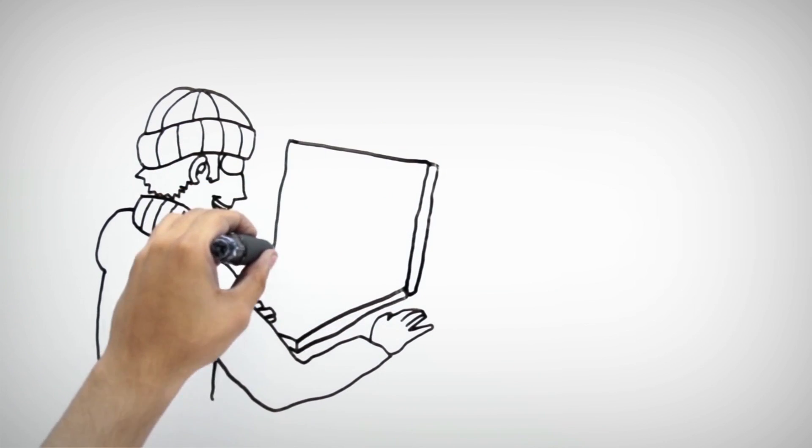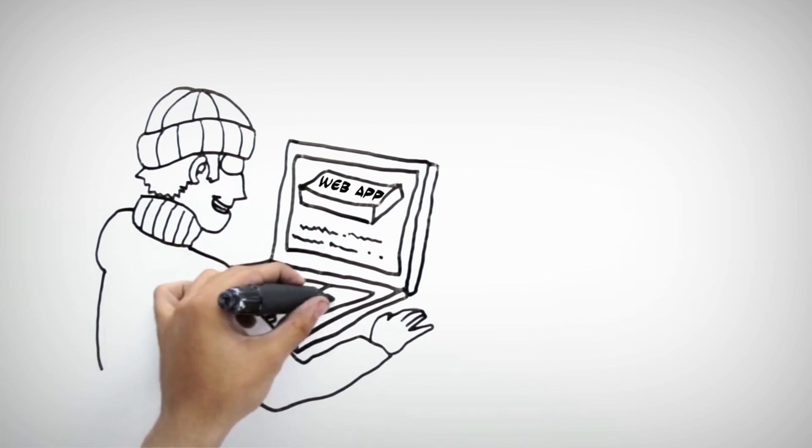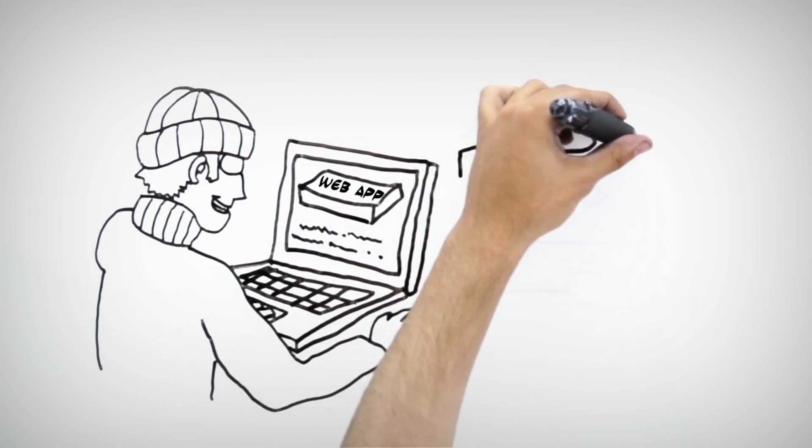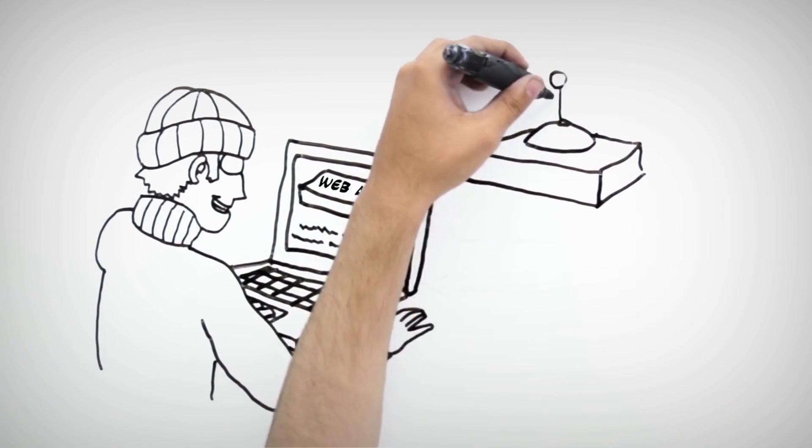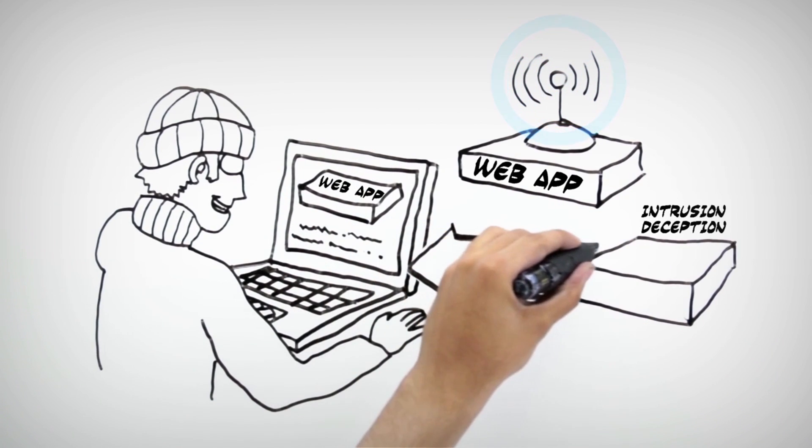Juniper's Web App Secure is a solution that protects your web apps by detecting and deceiving hackers using our innovative intrusion deception technology, which detects with virtually zero false positives malicious activity as it's happening. This gives you certainty that a particular user is, in fact, a bad actor. We keep them busy with deceptive code while we fingerprint their device, capturing over 200 attributes.